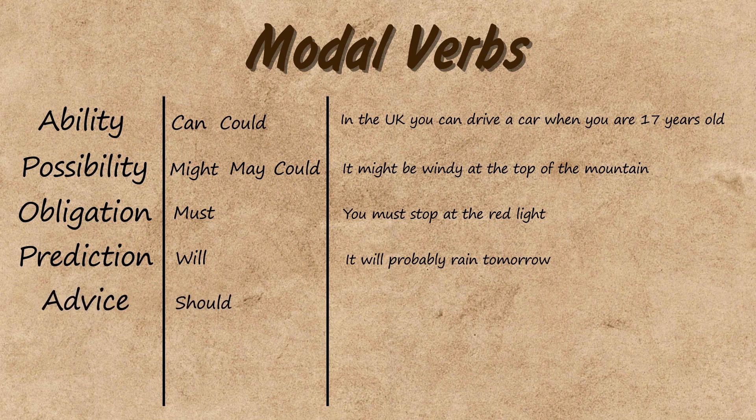Now we know what each modal verb means, let's look at a few important grammatical rules so that we know how to use them correctly. The first rule we need to know is that we don't conjugate modal verbs. They are the same whether the subject is I, you, he, she, we, or they. So we can say I can dance and she can dance, but we can't say she cans dance. The second rule we need to know is that after modal verbs we use the infinitive of the verb without to.